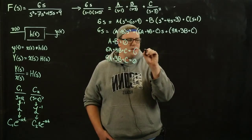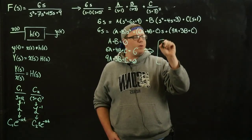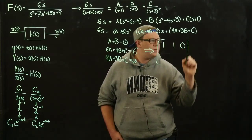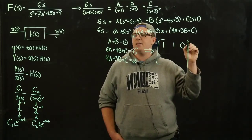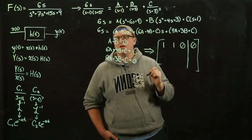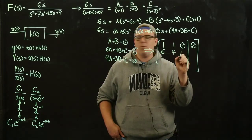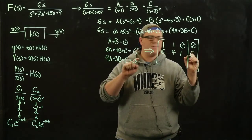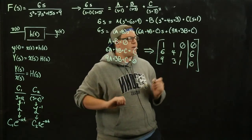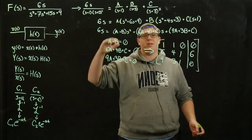Putting this into matrix form: the first column is our a coefficients, the second column our b coefficients, the third column our c coefficients, and we augment the answers onto the end to do Gaussian reduction. The first row is 1, 1, 0 augmented with 0. The second row is 6, 4, 1 augmented with 6. The third row is 9, 3, 1 augmented with 0. That's the matrix representation of this system of equations.